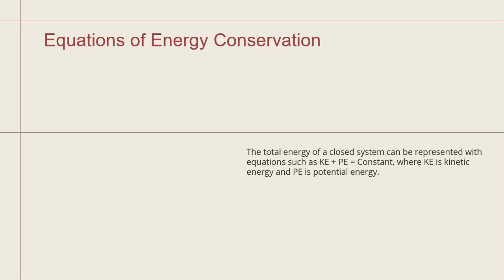How to write the equation of energy conservation? The total energy of a closed system can be represented with equations such as KE plus PE equals constant, where KE is kinetic energy and PE is potential energy. This is most important while doing problems for stability analysis.